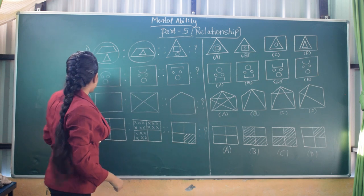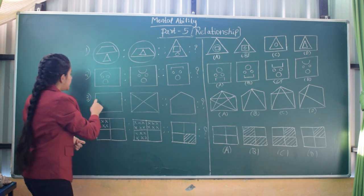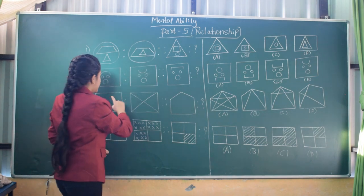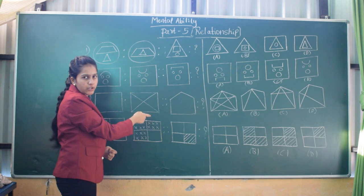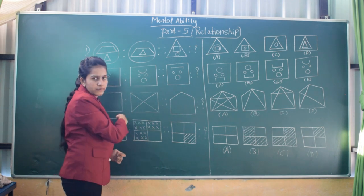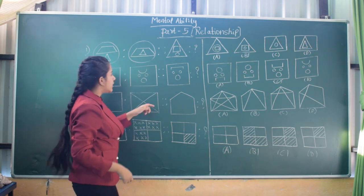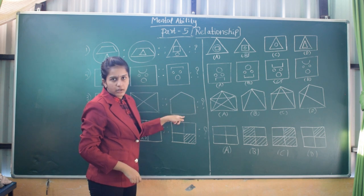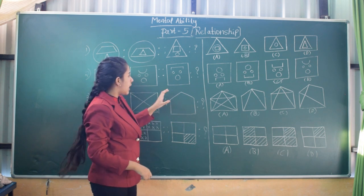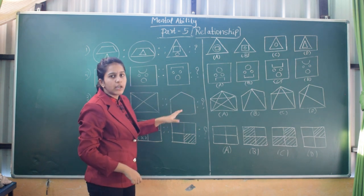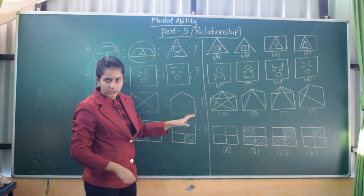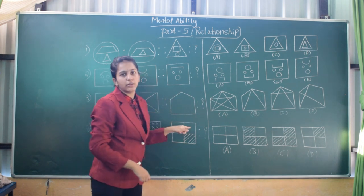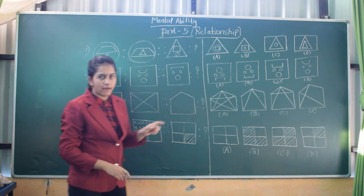In the next question, there is a square and in the relationship figure of that square, there are two diagonals drawn. In our question figure, there is a pentagon. So our answer will be the pentagon along with all of its diagonals. To find the number of diagonals of the pentagon, we have a formula.